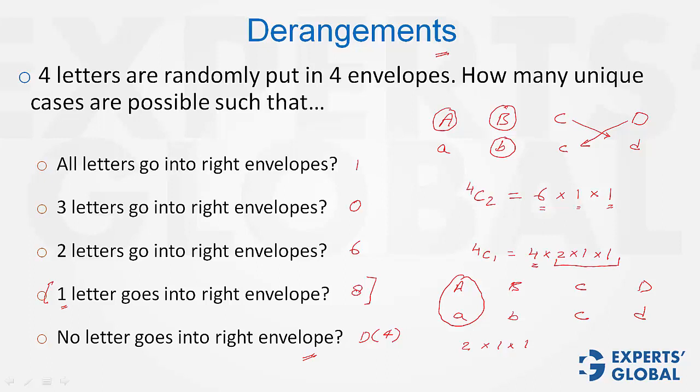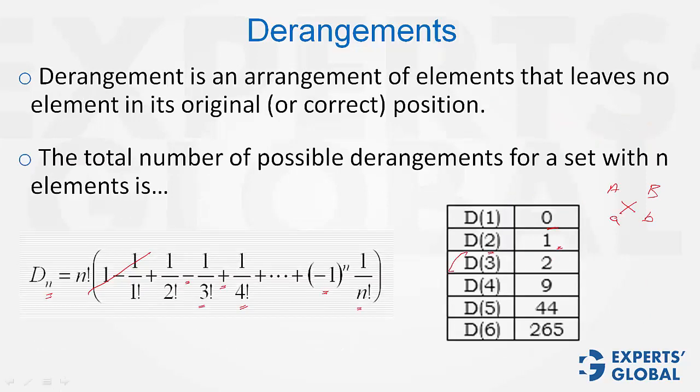So, after one letter went into the correct envelope, the other three could be deranged in just two ways. So, if you know that d3 is 2, you can just directly apply and save some time.